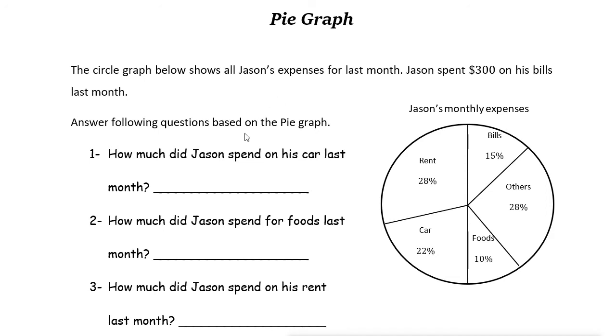Answer the following questions based on the pie graph. First we know that it is $300 for bills and bills are here. It is 15 percent of the whole expenses. So let's just find the whole expenses. Let's say the whole expenses is just X.